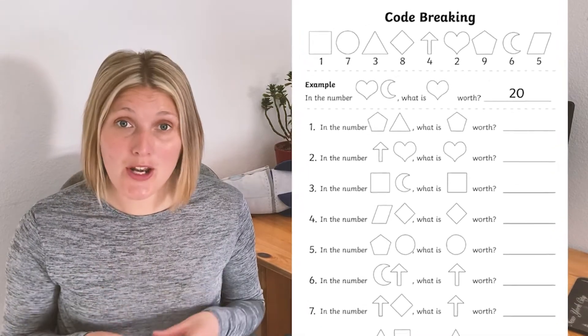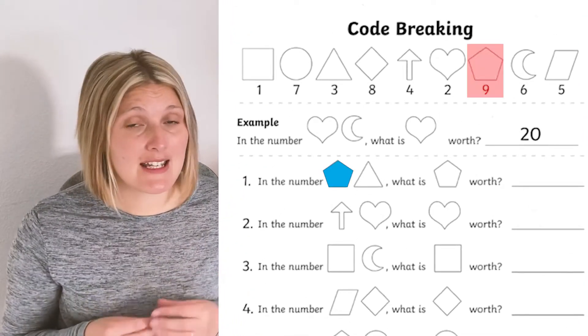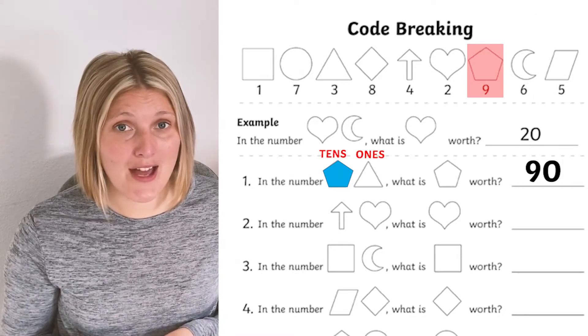For this top one, the children are being asked to recognize that the pentagon, which is nine in the code, actually represents 90 because it's in the tens column of that number.